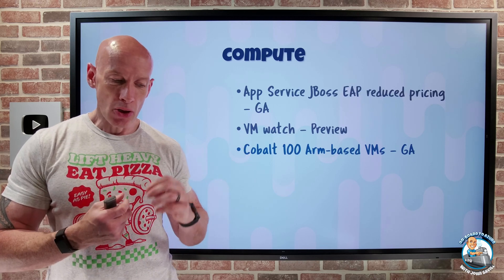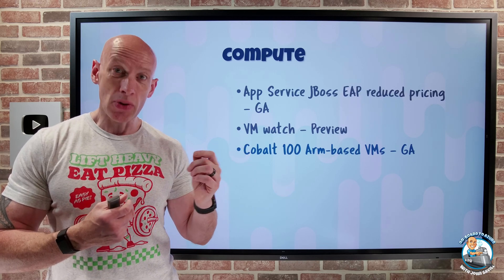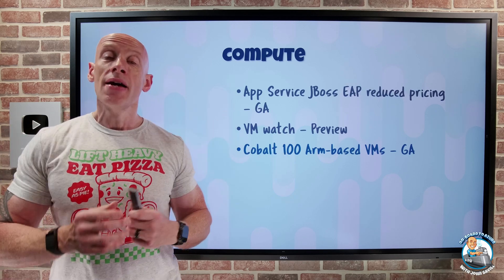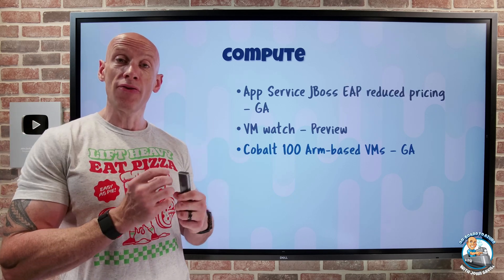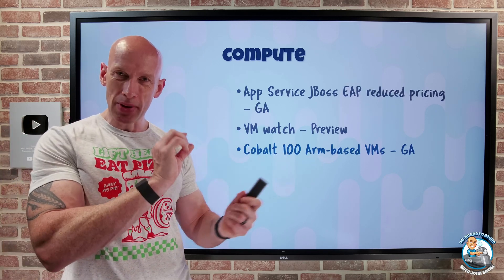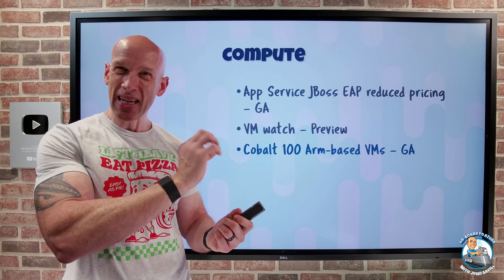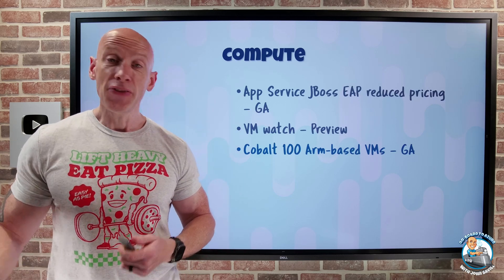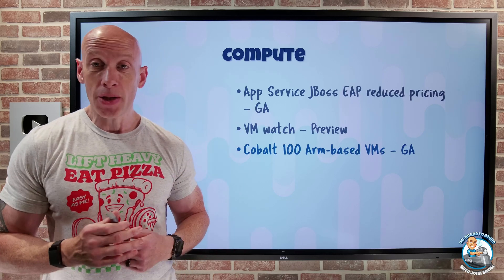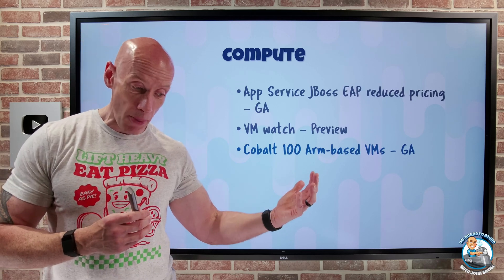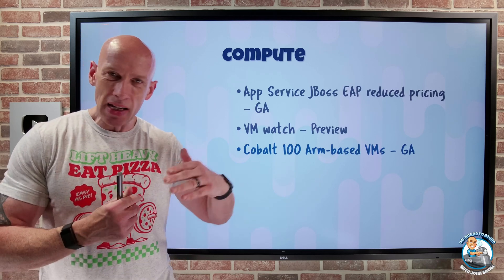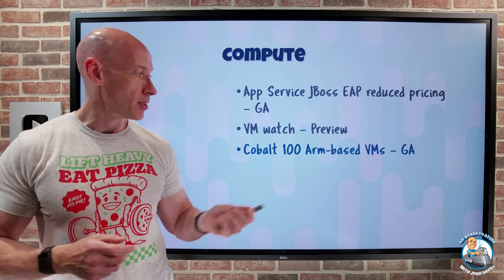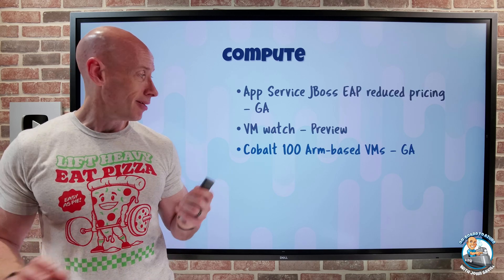Then there's the EP, which is memory optimized with an 8-to-1 memory-to-CPU ratio. There are variants with or without local temporary storage — the D variant has local temporary storage available. It's a 50% better price performance than the previous ARM-based VMs, and there's a whole set of stats around how much better it is. You can now go and check that out.